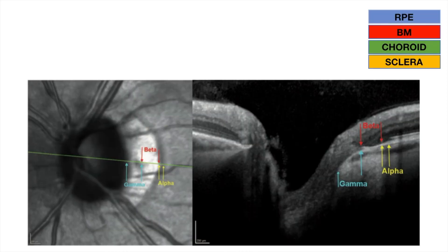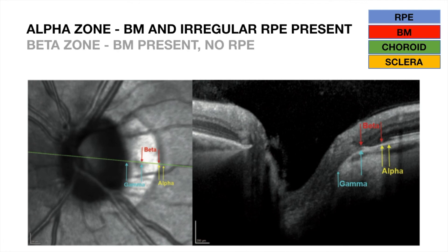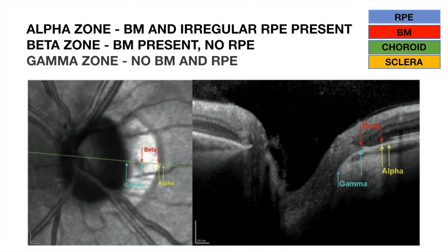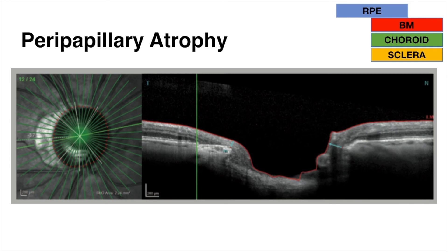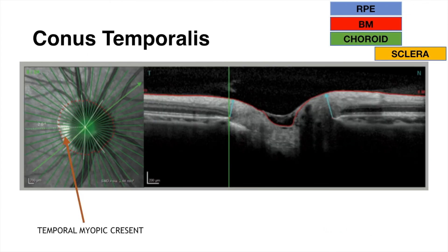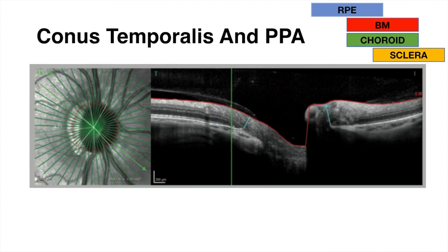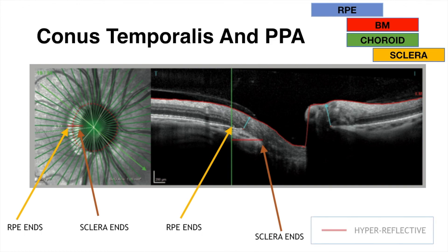The alpha zone is where both Bruch's membrane and RPE are present. The beta zone is where only Bruch's membrane is present. The gamma zone is where neither Bruch's membrane nor RPE are present. In peripapillary atrophy, RPE ends before Bruch's membrane, producing hyperreflectance. In conus temporalis, RPE, Bruch's membrane, and choroid end together before the sclera, producing hyperreflectance. In PPA with conus temporalis, Bruch's membrane ends between the RPE ending and scleral ending, producing hyperreflectance.